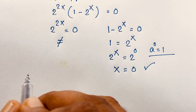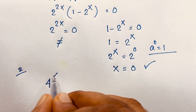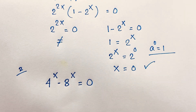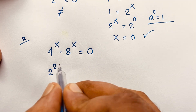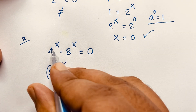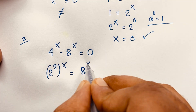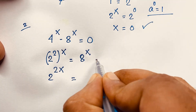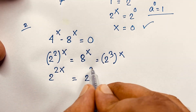Now I will solve this question using an alternate method. Our question is 4 to the power x minus 8 to the power x is equal to 0. Then here, 2 to the power 2x. If I move the 8 to the other side, it will be 4 to the power x equals 8 to the power x. So 8 to the power x equals 2 to the power 2x, and 8 to the power x equals 2 to the power 3, bracket whole to the power x, which is 2 to the power 3x.